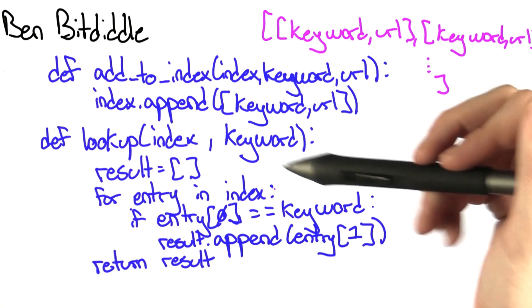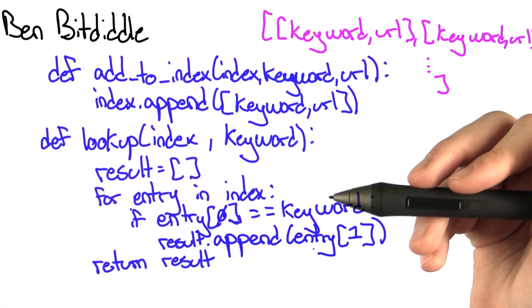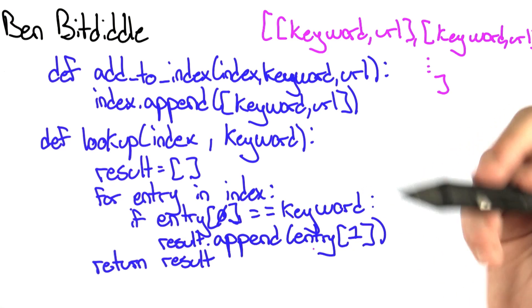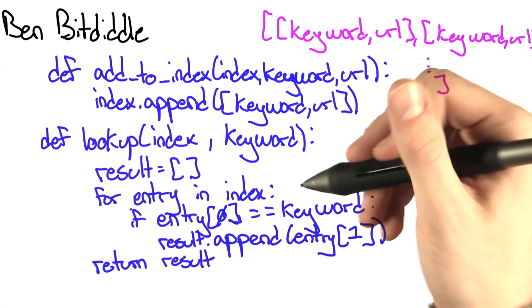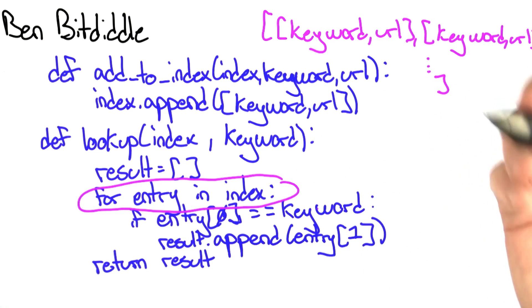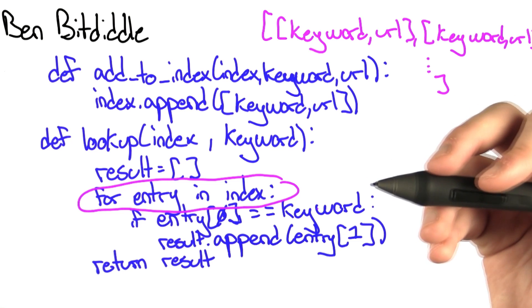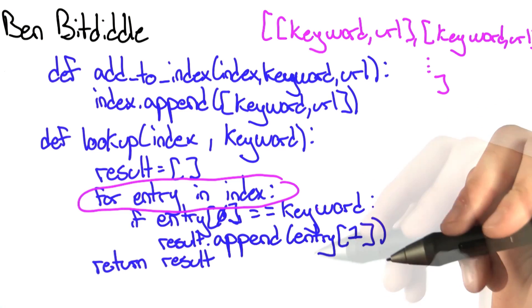Before, lookup would just go through the index until it found the keyword corresponding to this lookup. In the previous case, the lookup would stop as soon as it found the keyword. But now, lookup has to go through the entire index no matter what, because it doesn't know how many times the keyword appears. Whereas before, all it had to do was find the one occurrence of the keyword.